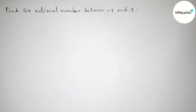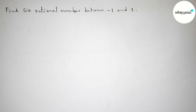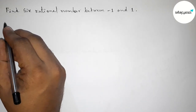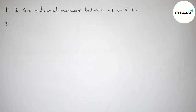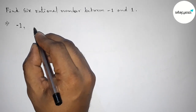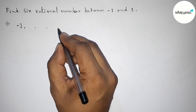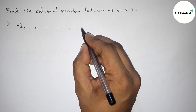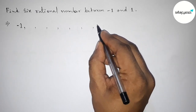Hi everyone, welcome to SI Share Classes. Today in this video we have to find six rational numbers between minus 1 and 1 in an easy way. Please watch the video till the end. So let's start. Here we have to find six rational numbers, so now taking six blank spaces to fill all the six rational numbers by doing some important calculation.